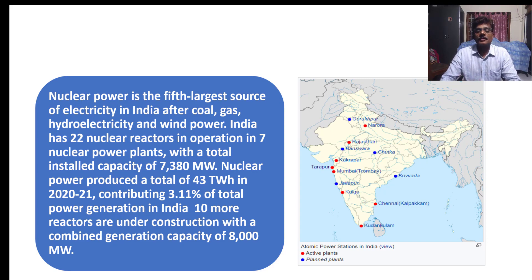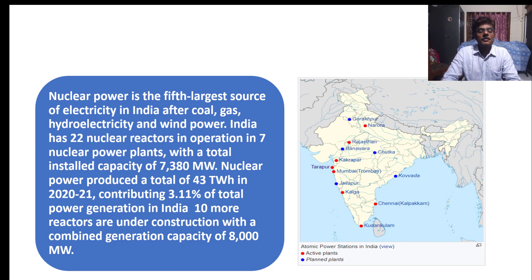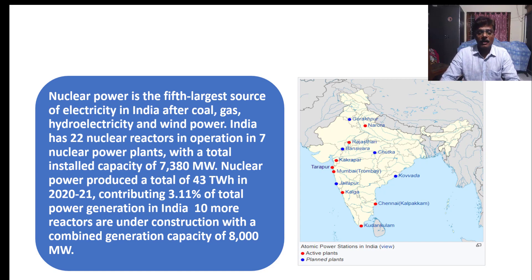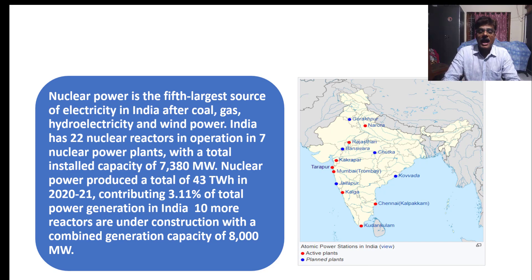Nuclear power has been used for peaceful purposes — especially for the production of electricity. Nuclear power is the fifth largest source of electricity in India. The ranking is: first coal, next gas, third hydroelectricity, fourth wind power, and fifth nuclear power.